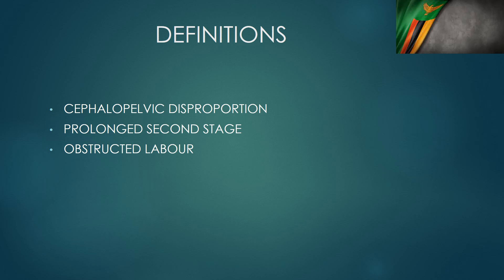I've seen lots of people interchange obstructed labour and cephalopelvic disproportion. In cephalopelvic disproportion, you have a head that is absolutely bigger than the pelvic inlet or outlet, or a head that is relatively bigger than the pelvis. Sometimes the head is small but not positioned properly — a brow presentation, a face presentation — and that is a cephalopelvic disproportion because the head, in the way it's positioned, will not go through the maternal pelvis.